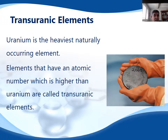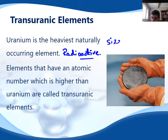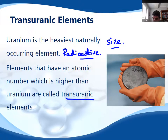Uranium is the heaviest naturally occurring element. Being so large, it is radioactive, so all of the isotopes of uranium are radioisotopes because of their large size. Anything beyond uranium in the periodic table is called a transuranic element, and all of these have been synthesized in a laboratory.